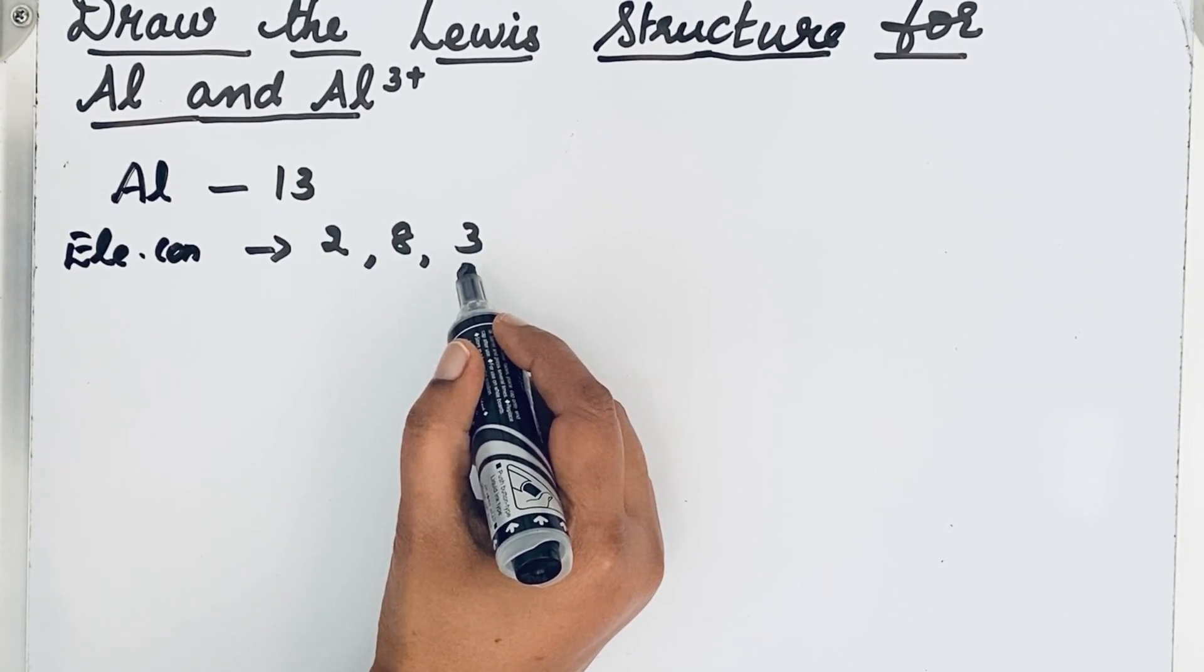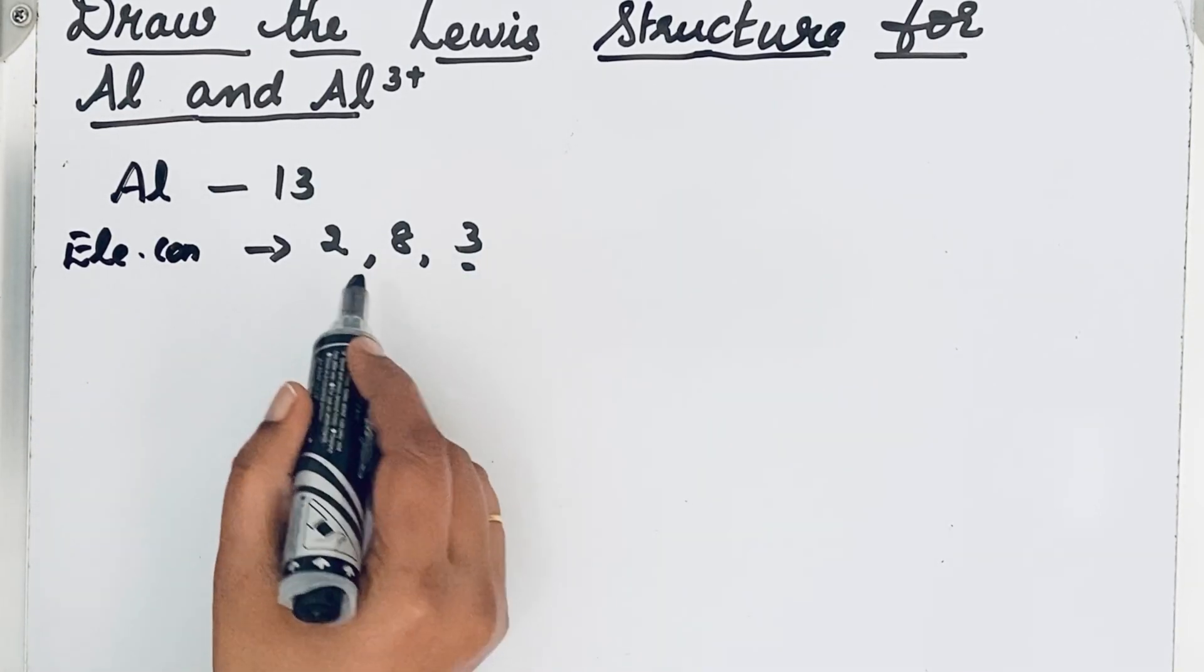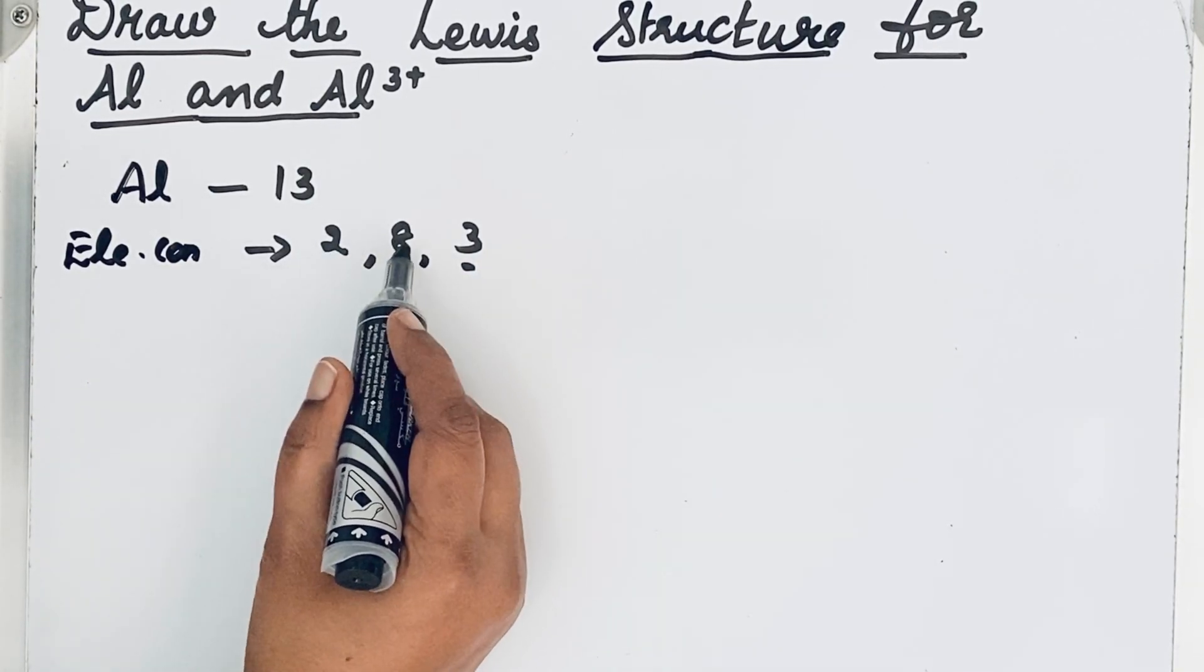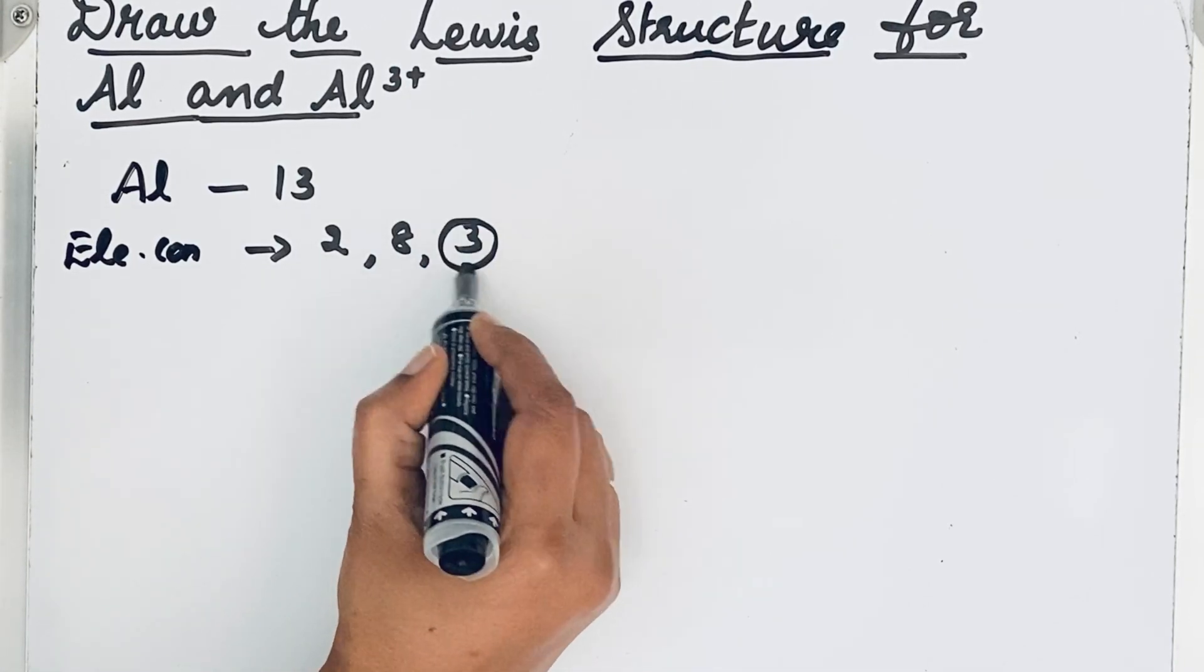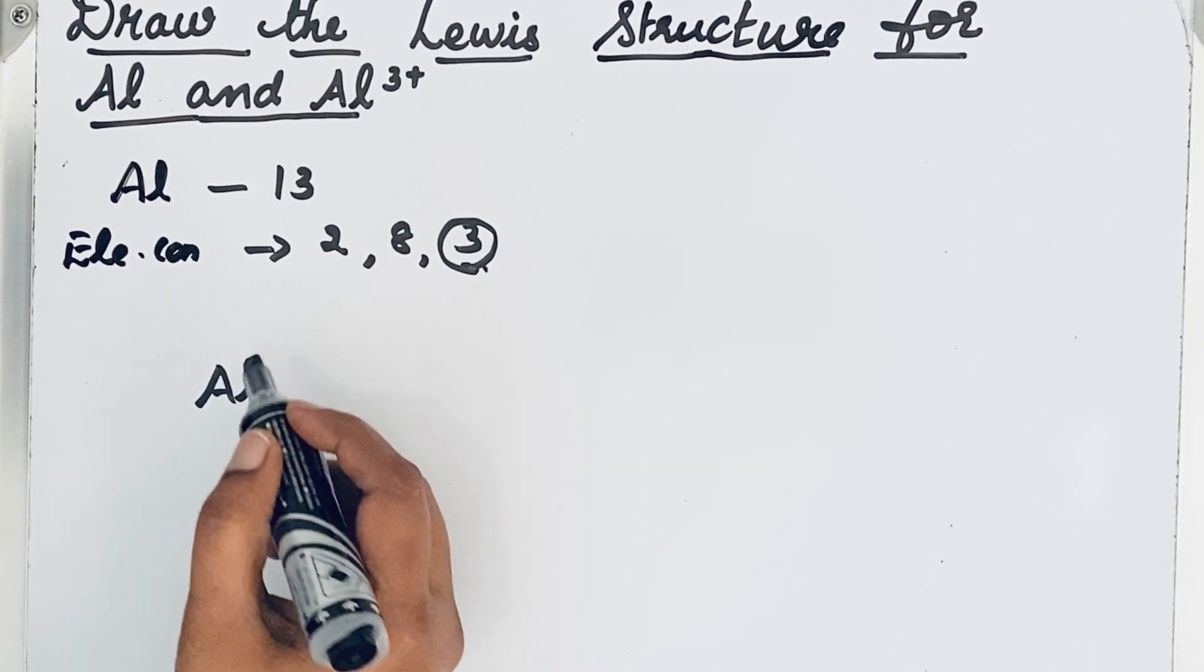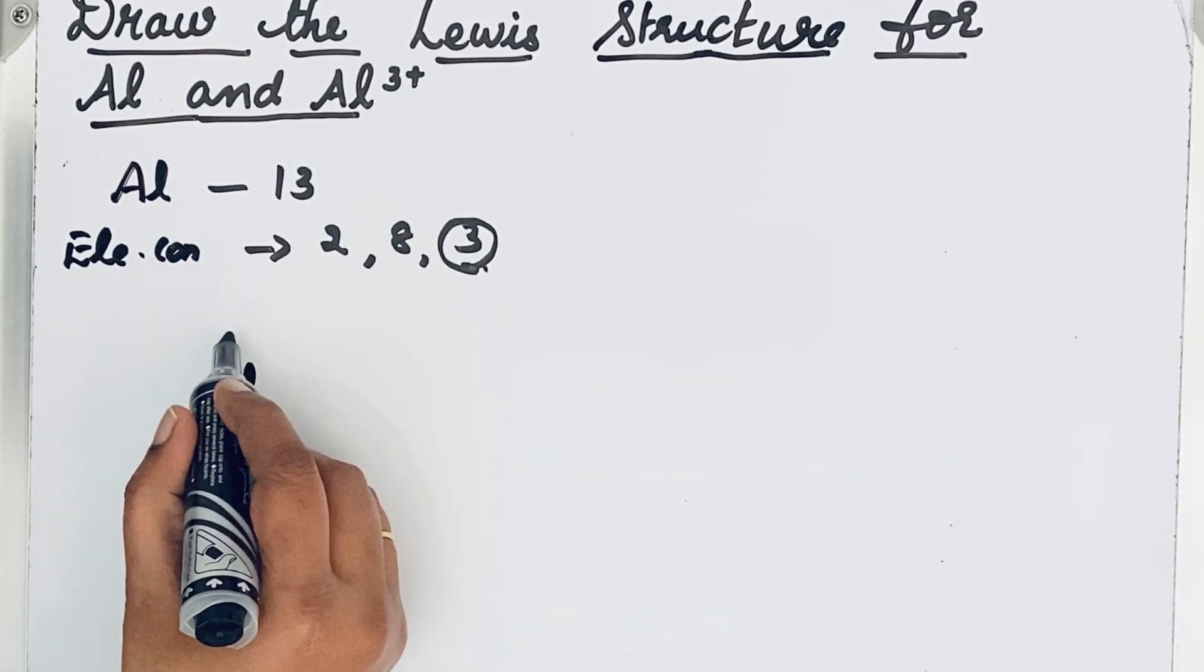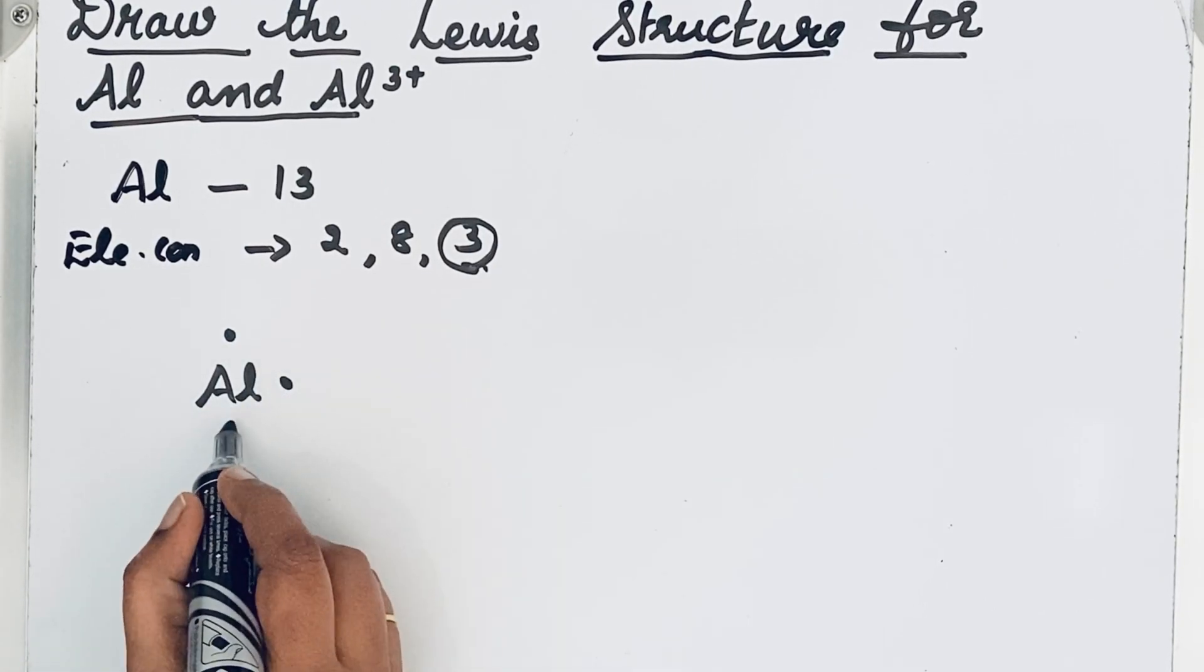The electrons are represented in the form of a dot. We are not mentioning any inner electrons, only outer valence electrons. So let us write aluminium - there are 3 electrons: one dot, second dot, and third dot.